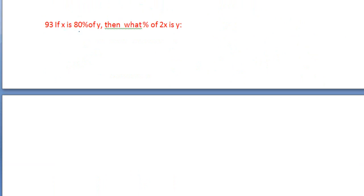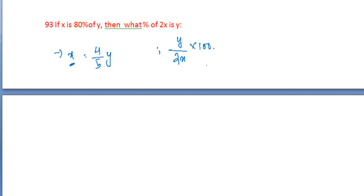Next question. If x is 80% of y, then what percentage of 2x is y? x is equal to 80% of y, so x equals 4 by 5 into y. Then m equals 8 x 5, and y gets cancelled.